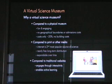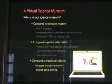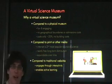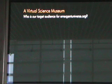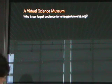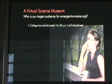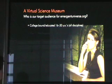Compared to a traditional website, you're going to engage through interactivity and enable active learning, which we believe is currently the best way to learn. So if we agree that an online science museum is a really good outreach methodology, your design's always going to be better if you decide for whom you're going to design it before you start. Who is the target audience for EmergentUniverse.org? The audience we decided upon were college-bound or educated 16-to-30-year-olds across a broad range of disciplines.